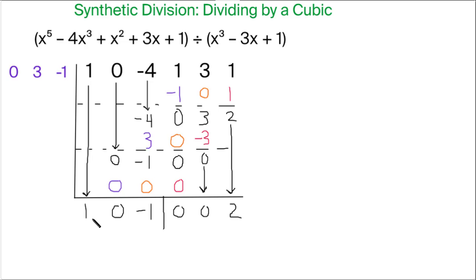Now how we interpret this 1, 0, negative 1 is this is x squared. There's no x term, and then there's a minus 1 in the end.